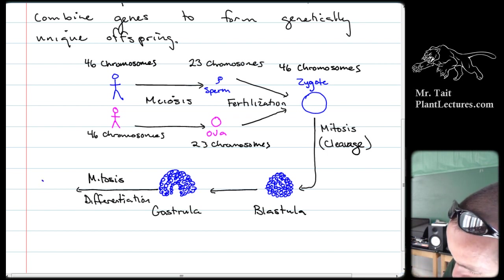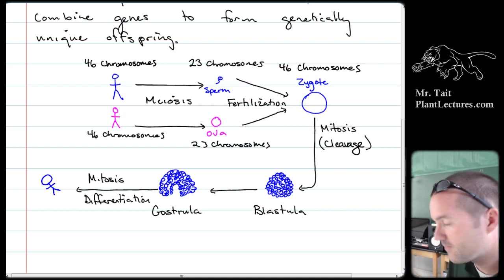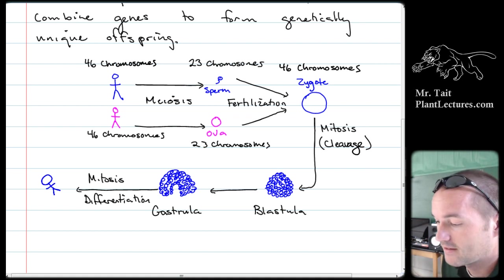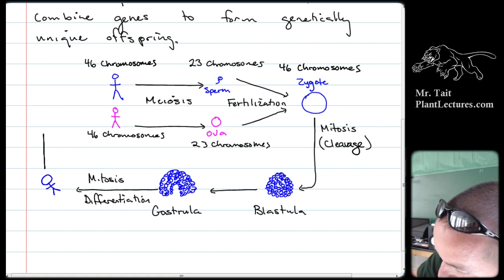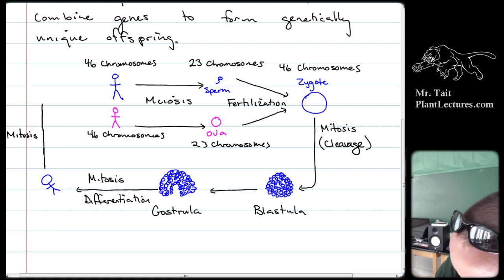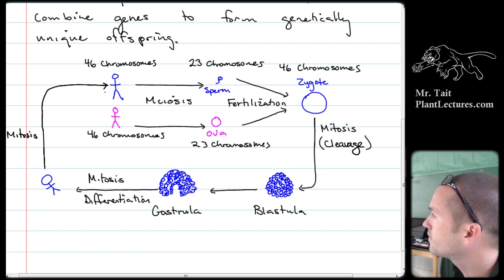Eventually it forms a little baby. Babies are drawn with a giant head because babies proportionally have very large heads — they need to hold their developing brains. Then it goes through more mitosis, grows up to be a person, and then goes through meiosis to make sperm cells. And that's the circle of life.